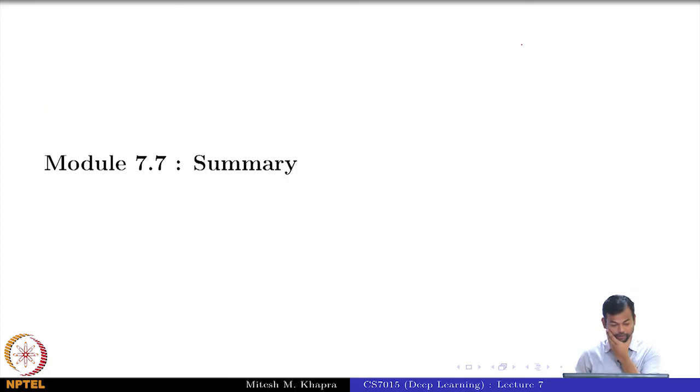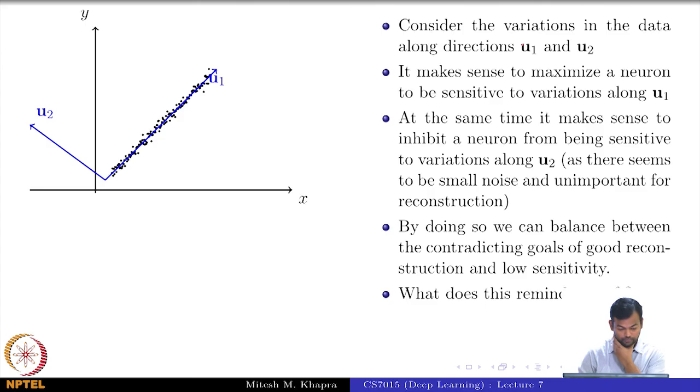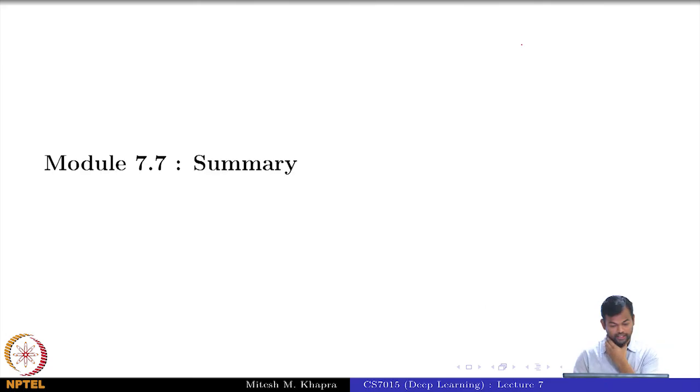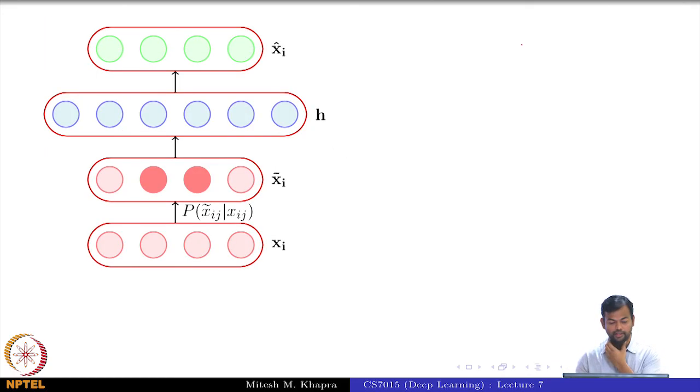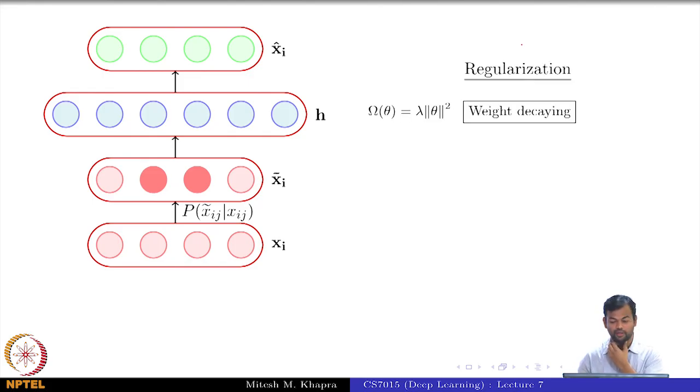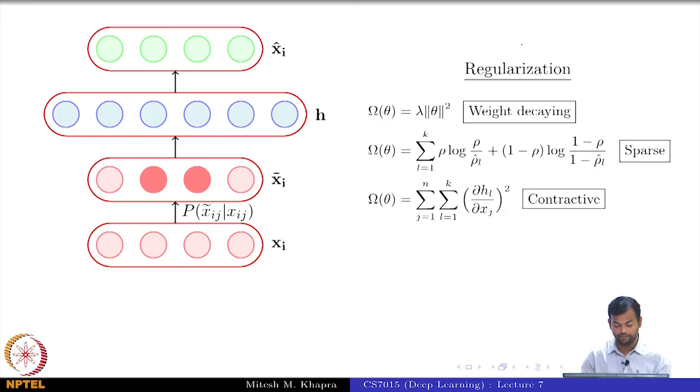I think that is where we will end lecture 7, and just a quick summary. We showed that under certain conditions autoencoders are equivalent to PCA, and we used the SVD theorem. We looked at different types of regularizations for autoencoders: weight decaying, the standard L2 norm, the sparse autoencoder, the contractive autoencoder, and denoising autoencoders. That is the summary of this lecture.